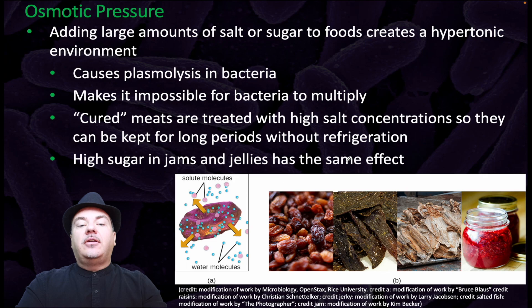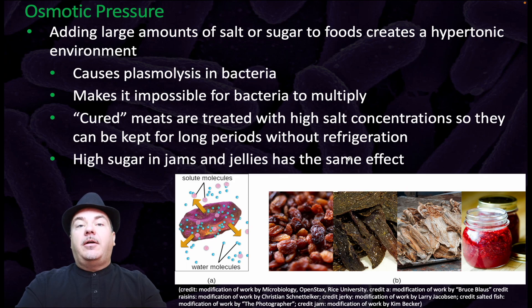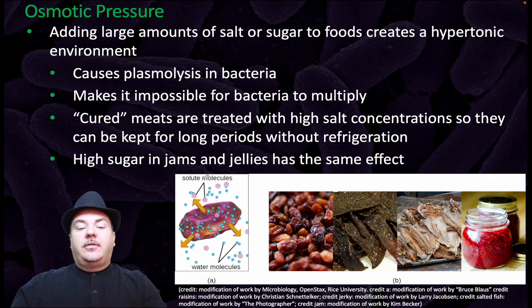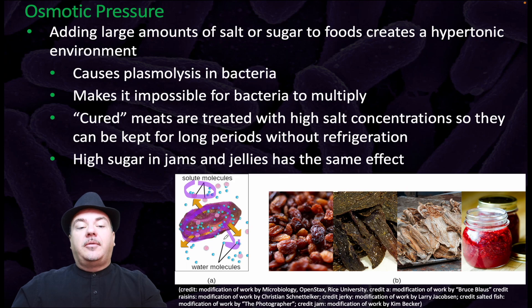Osmotic pressure: adding large amounts of salt or sugar to foods creates a hypertonic environment. It causes plasmolysis in bacteria and makes it impossible for bacteria to multiply. Cured meats are treated with high salt concentrations so they can be kept for long periods without refrigeration, and high sugar in jams and jellies has the same effect. In a high salt or high sugar environment, there is a high amount of solutes outside the bacterial cells compared to the low amount inside. Due to osmosis, water leaves those bacterial cells — they shrivel up and die from lack of water.